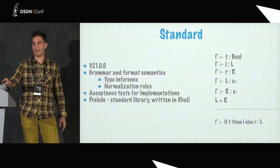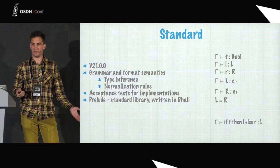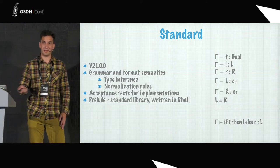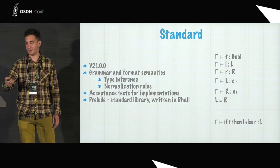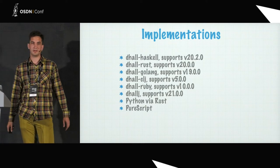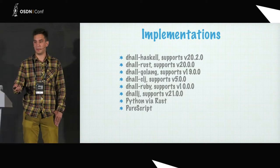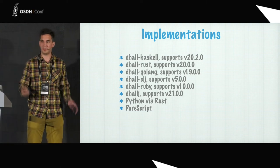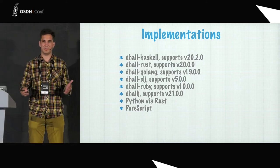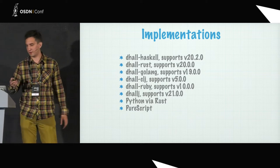The if statement accepts a bool and returns either the left variable or the right variable, and they have to be of the same type. The whole standard is written in very precise mathematical notation. There are major implementations for Dhall in Rust, Golang, Clojure, and Java. There is also an implementation for Python, but it's just a wrapper around the Rust implementation. Most implementations provide a read-only view of a Dhall configuration file — you can load a file, evaluate it, and return data as a result.